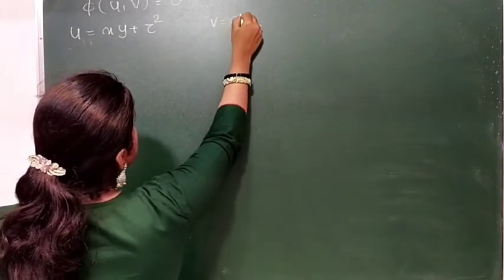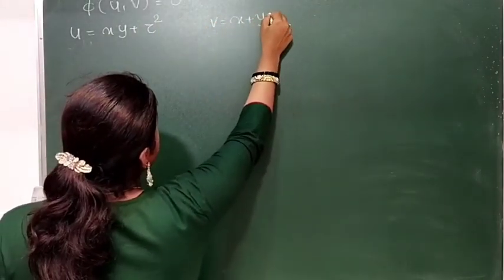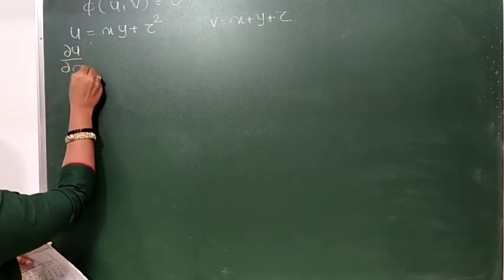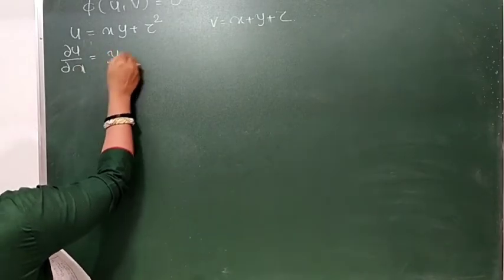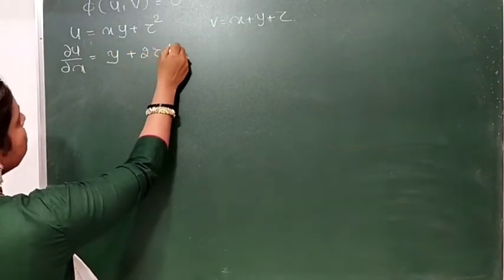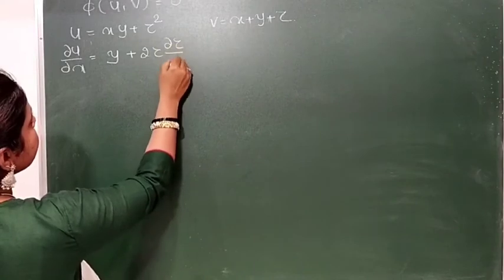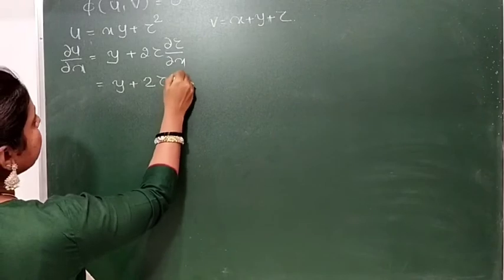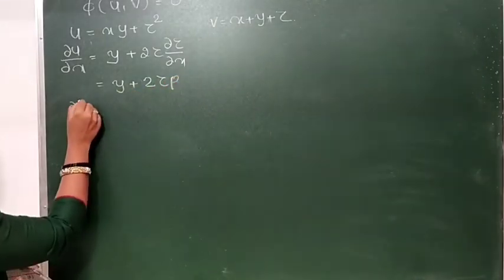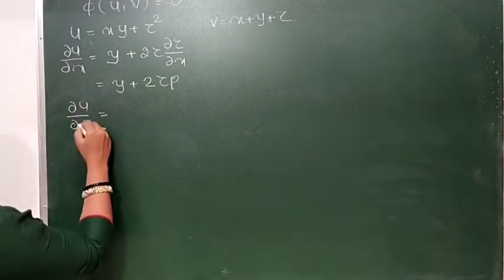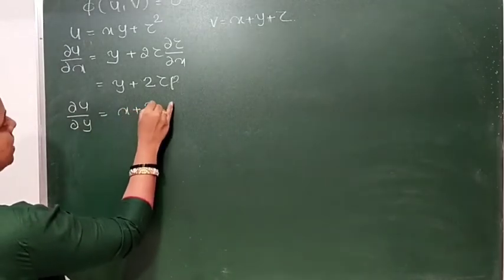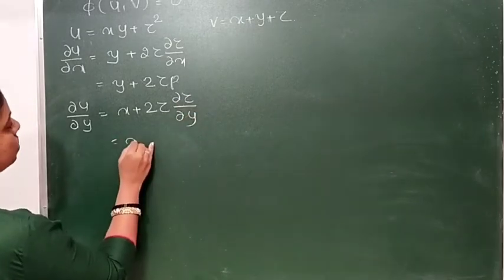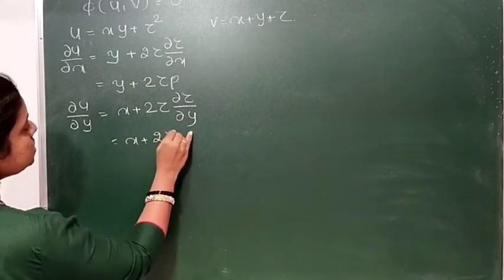And v you have to consider as x plus y plus z. You have to differentiate u with respect to x: this becomes y, z squared becomes 2z times ∂z/∂x, equal to y plus 2z times p. Now we have to find ∂u/∂y, equal to x kept as it is, plus 2z times ∂z/∂y. This we write as 2z times q.